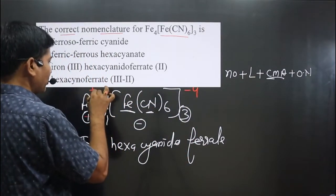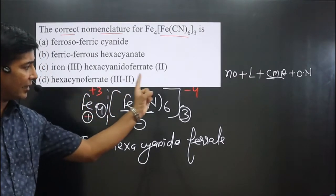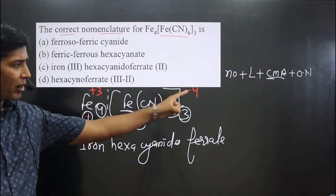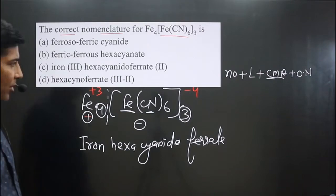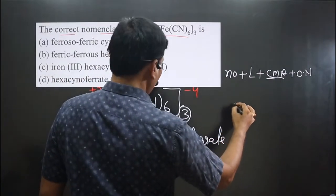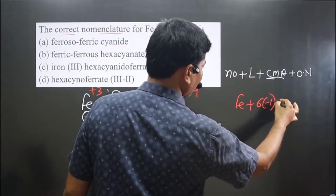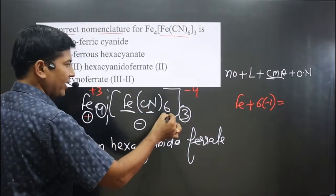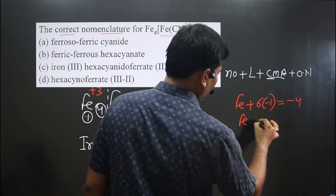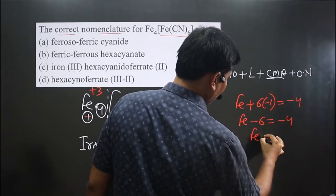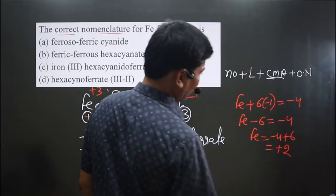So this iron is present in plus three oxidation number, and this entire anionic part has a minus four charge. Now we can easily calculate the oxidation number of iron: Fe + 6×(−1) = −4, so Fe − 6 = −4, which gives Fe = −4 + 6 = +2. Very interesting.